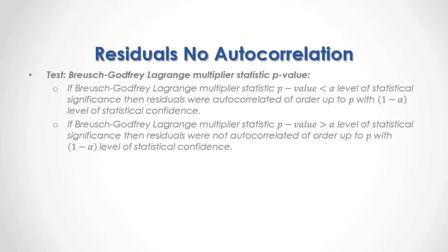What we're testing is the Breusch-Godfrey Lagrange multiplier statistic p-value. If the p-value is less than the α level of statistical significance, then residuals were autocorrelated of order up to p with 1 minus α level of statistical confidence. On the other hand, if the p-value is greater than the α level of statistical significance, then residuals were not autocorrelated of order up to p with 1 minus α level of statistical confidence.